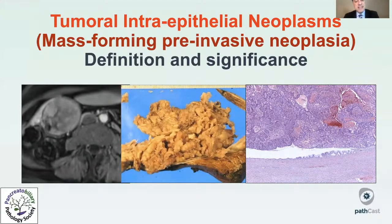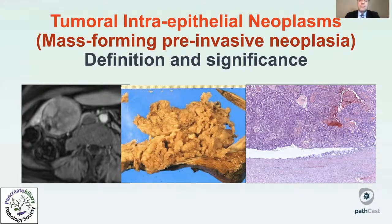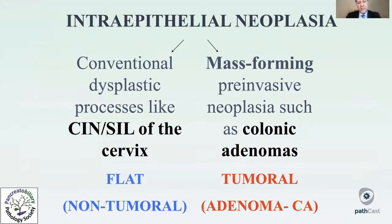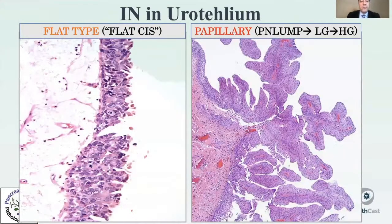This case is an example of what we call tumoral forms of intraepithelial neoplasia — mass-forming pre-invasive neoplasms. They are not invasive per se, but can lead to invasive carcinoma; by nature, they are non-invasive and form tumors. This flat versus tumoral distinction is similar to what we know in other organs: in the cervix we have CIN/SIL (flat non-tumoral dysplasia), whereas colonic adenomas are the classic examples of the adenoma-carcinoma sequence, or tumoral forms of intraepithelial neoplasia. This concept is also well established in the urothelium, both molecularly and by biologic behavior.